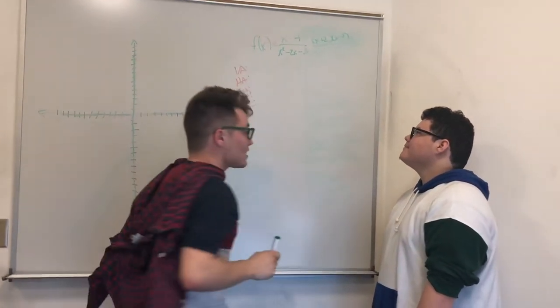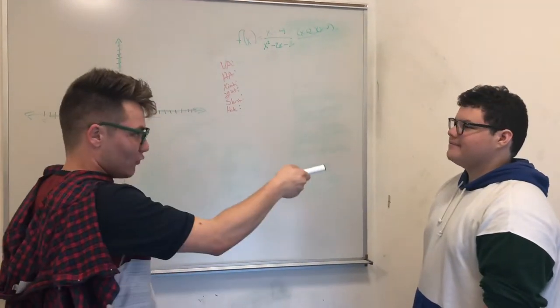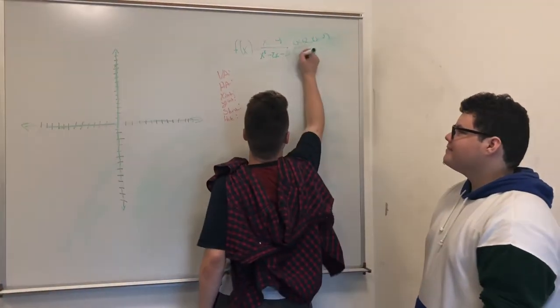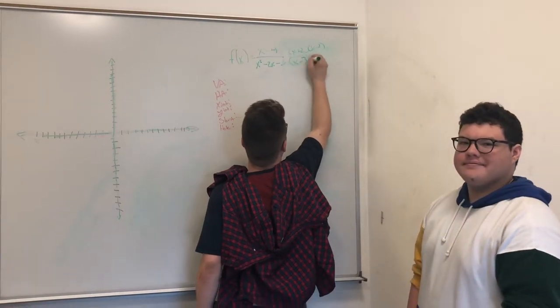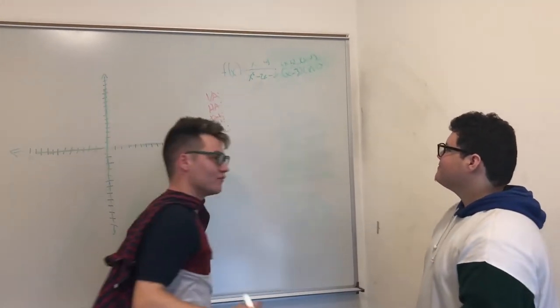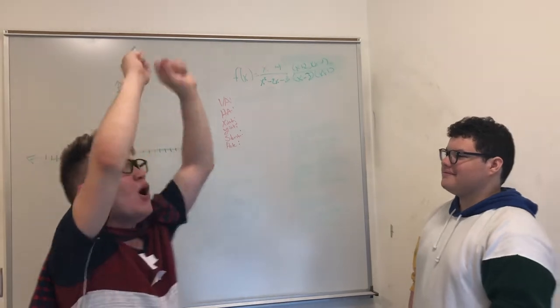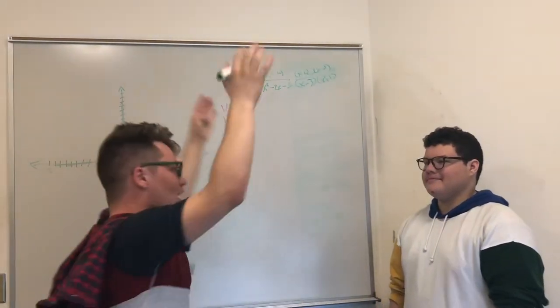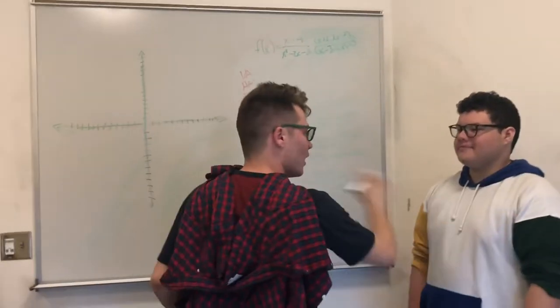And then we have to factor the denominator. So, what multiplies negative 3 and adds up to negative 2? Negative 3 and positive 1. Alright, I like the way you think. So x minus 3 times x plus 1 are the factors. Hooray! Hooray! We have factored the function! Claps all around. You did well.